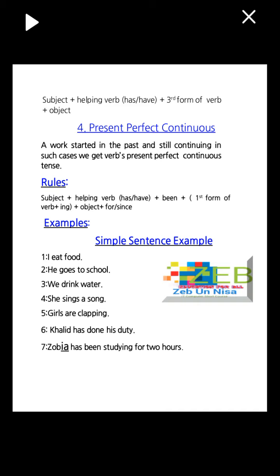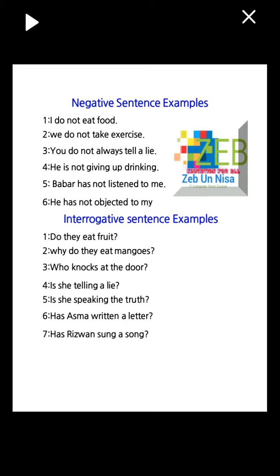Negative sentence examples: number one, I do not eat food. Number two, we do not take exercise. Number three, you do not always tell a lie. Number four, he is not giving up drinking. Number five, the barber has not listened to me. Number six, he has not objected to my request.